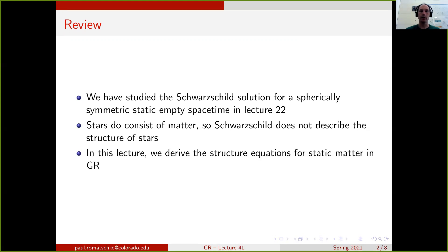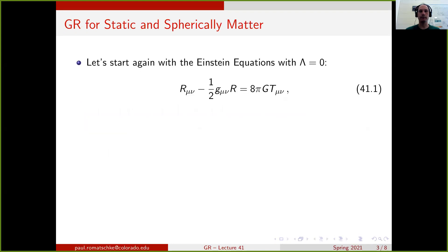In this lecture, we want to re-derive the structure equations for static matter in general relativity. The starting point is again the Einstein equations with the cosmological constant set to zero because we are only considering small regions of spacetime.